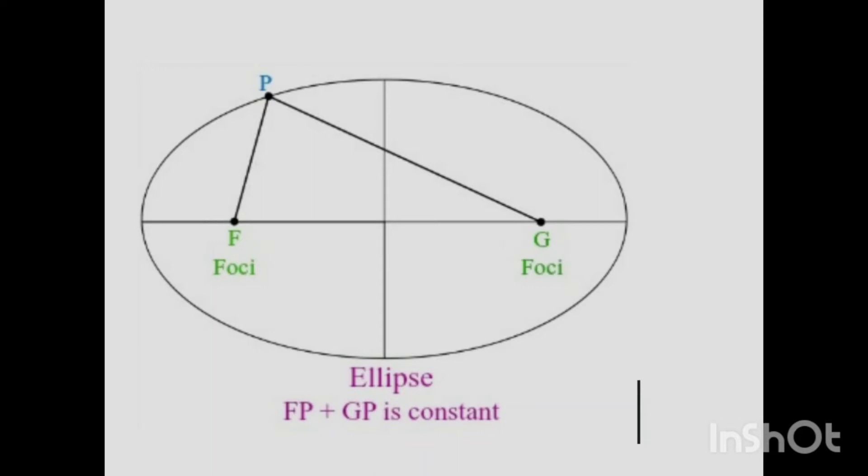Let's say for instance F distance FP were 3 millimeters and distance GP were 9 millimeters. If you add both of them you'll get 12. But let's say we shifted P to the center of the ellipse and FP now became 6 and GP became 6, the sum of the two distances would still be 12.